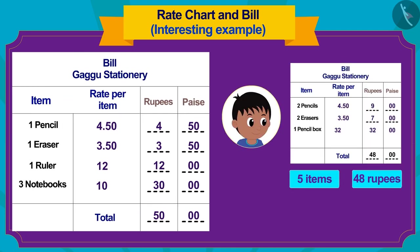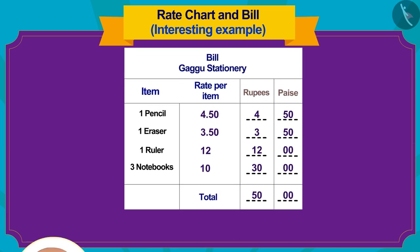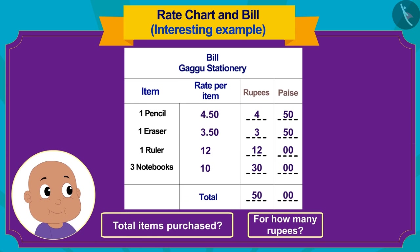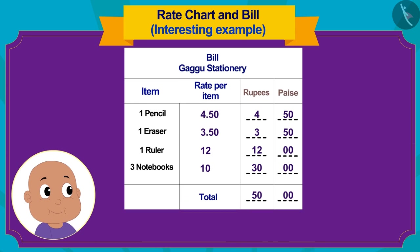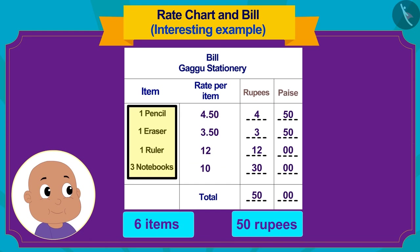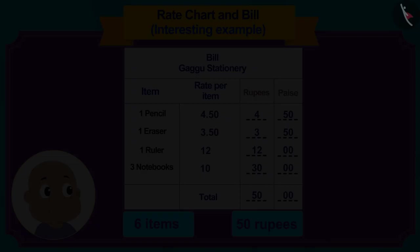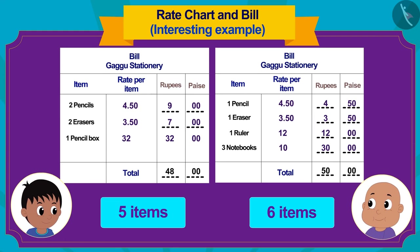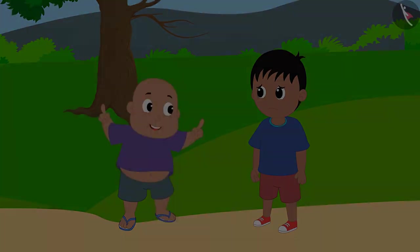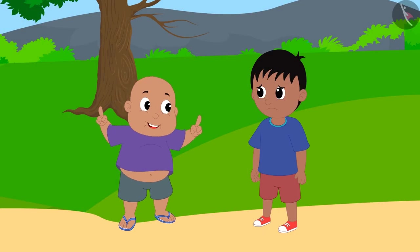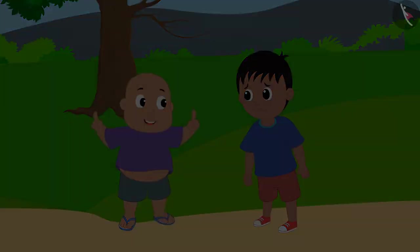Raju bought a total of 5 items for 48 rupees. And how many items did Bablu buy, and for how many rupees? Bablu bought 6 items for 50 rupees. In this way, Bablu won the bet — and see how he is happily dancing!